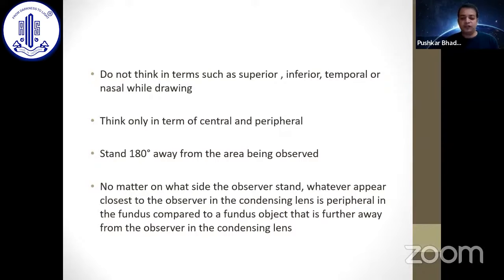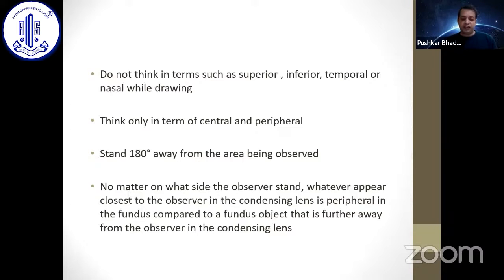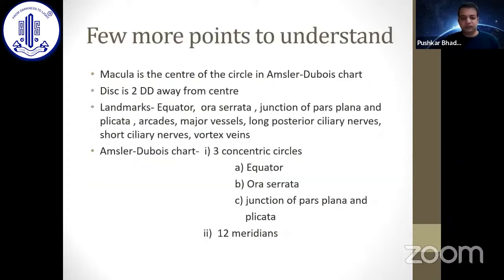No matter on what side the observer stands, whatever appears closest to the observer in the condensing lens is peripheral in the fundus, compared to a fundus object that is farther away in the condensing lens. Also, the macula is the center of the fundus.